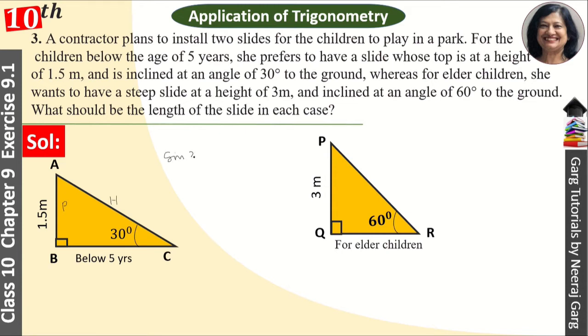So sine 30 degrees, that is equal to what will happen? That is equal to perpendicular upon hypotenuse. You should learn this formula. So you should know the value of sine 30 degrees. The trigonometric ratios table is in both sides. So the value of sine 30 degrees is 1 upon 2.